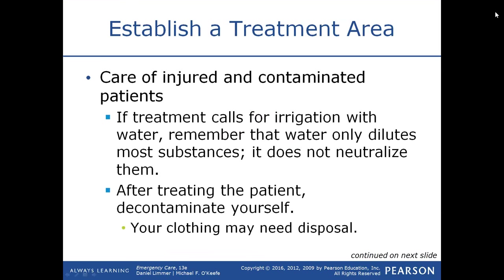Priority 1 patients have life-threatening illnesses or injuries. Priority 2 have serious but not life-threatening conditions. Priority 3 patients are the walking wounded. Priority 4 — sometimes called Priority Zero — are dead or fatally injured patients who will die soon. We use START triage, which stands for Simple Triage and Rapid Treatment. The foundation of the system is speed, simplicity, and consistency — taking the guesswork out for the EMT when making decisions on who gets treated.